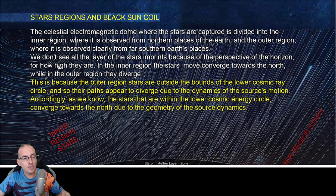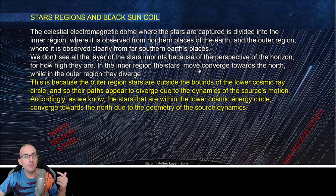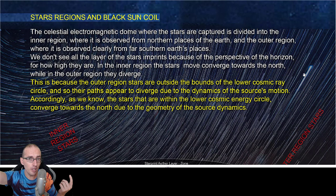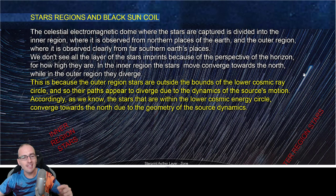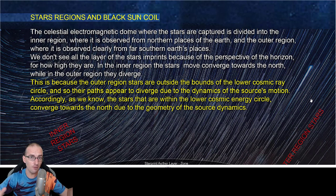We don't see all the layer of the stars imprints because of the perspective of the horizon. Real world physics for how high they are. In the inner region, the stars move, converge towards the north, while in the outer region they diverge. Do you understand the difference between convergence and divergence? I love Divergent in the movie as well.